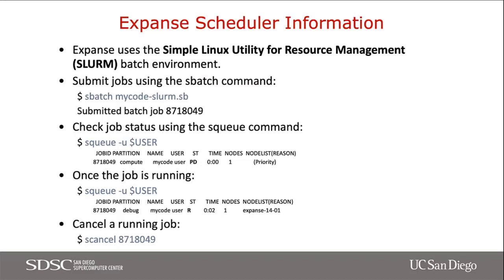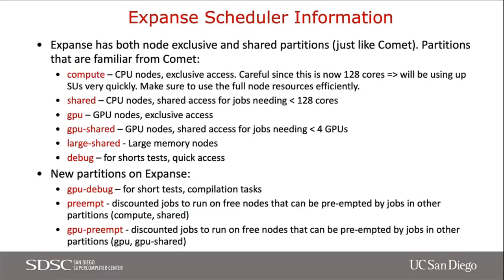In terms of scheduling, Expanse uses Slurm just like Comet, but it's a much newer version with additional features and stricter enforcement of limits. The usual Slurm commands work: submit jobs using sbatch, check your jobs using squeue — I encourage using the dash-U option so you're not querying everyone's jobs at the same time, as that slows things down. Use scancel to cancel a job.